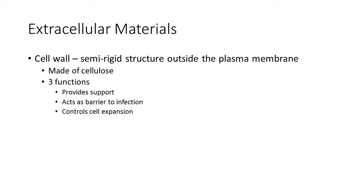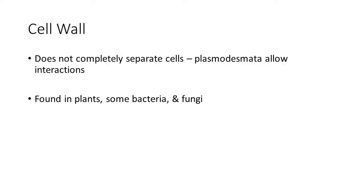Cell walls protect plants from infection. In a plant cell, it definitely encapsulates each cell. So if one cell gets sick, that sickness doesn't always just jump from cell to cell to cell inside a plant. It can be sort of contained or quarantined. And sort of going along with the turgor pressure, it can control cell expansion.